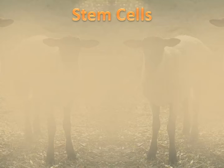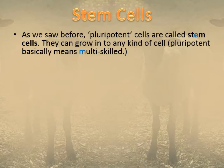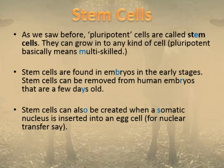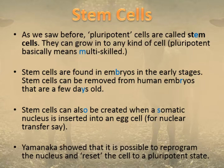Let's review what stem cells are. They are pluripotent cells — multi-skilled in a biological sense — meaning they are able to turn into any kind of cell. A human stem cell will always turn into a human cell, but it can become any kind of human cell: bone, liver, skin, heart — anything. Stem cells are found mostly in embryos at the early stages of development and can be removed when an embryo is just a few days old. They can also be created when a somatic nucleus is inserted into an egg cell for nuclear transfer, and Yamanaka showed it's possible to reprogram a somatic cell from the body of an animal back into its pluripotent state.